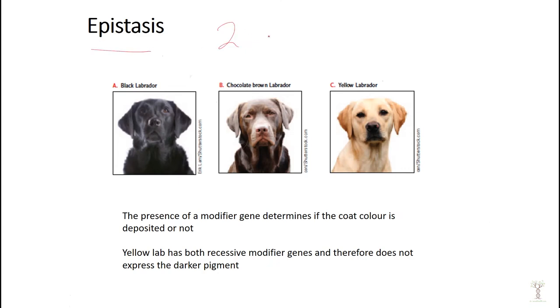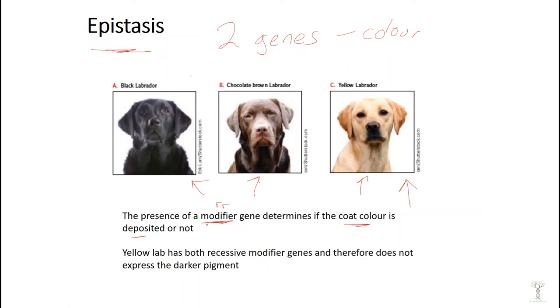The next way that we can inherit traits is called epistasis. The best example of this is Labrador retrievers. We can have black labs, chocolate labs, and golden labs, and how those color allele phenotypes are expressed depends on a modifier gene. So epistasis means that there are two genes contributing to coat color. One of the genes is for the pigment or the color, and another gene will determine if that coat color is deposited or not. In the golden lab there are two recessive modifier genes, so the pigment is not deposited in the same way as in the other two types. Epistasis has a modifier gene.